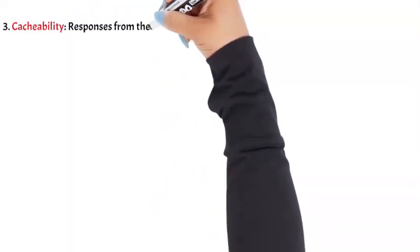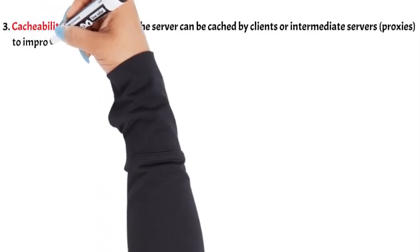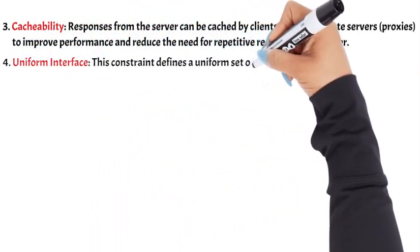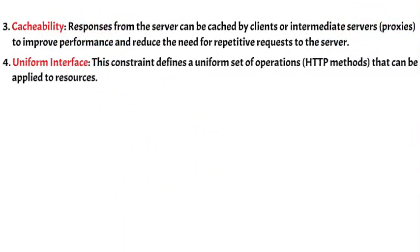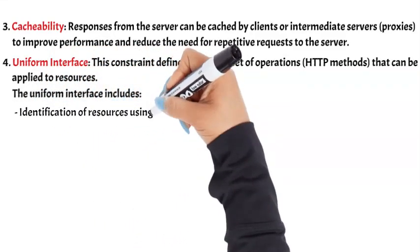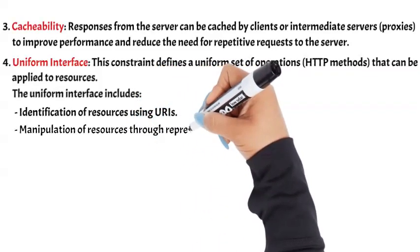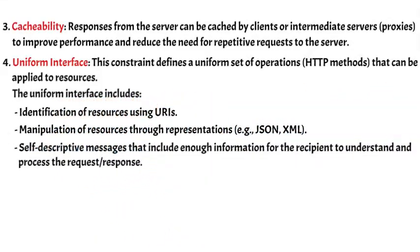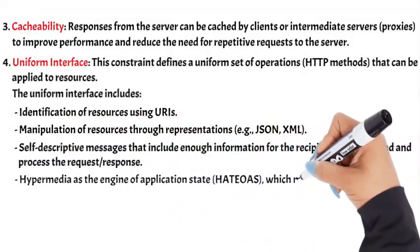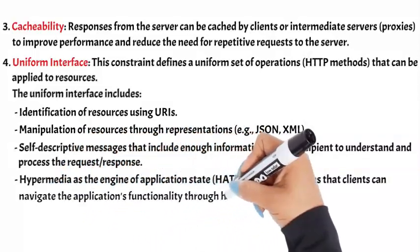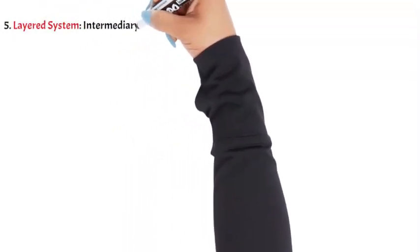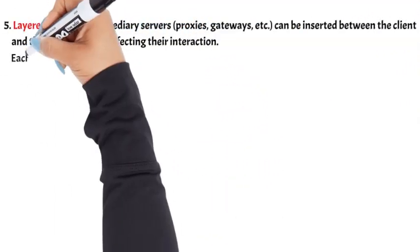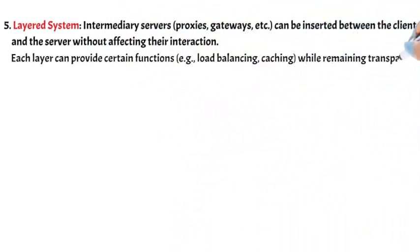3. Cachability — responses from the server can be cached by clients or intermediate server proxies to improve performance and reduce the need for repetitive requests to the server. 4. Uniform Interface — this constraint defines a uniform set of operations (HTTP methods) that can be applied to resources. The uniform interface includes: identification of resources using URIs; manipulation of resources through representations (e.g., JSON, XML); self-descriptive messages that include enough information for the recipient to understand and process the request/response; and Hypermedia as the Engine of Application State (HATEOAS), which means clients can navigate the application's functionality through hyperlinks embedded in responses. 5. Layered System — intermediary servers (proxies, gateways, etc.) can be inserted between the client and the server without affecting their interaction. Each layer can provide certain functions (e.g., load balancing, caching) while remaining transparent to the other layers.